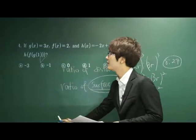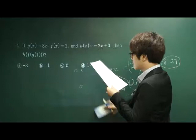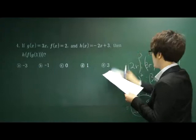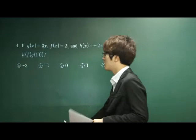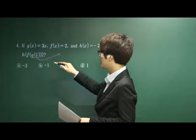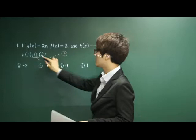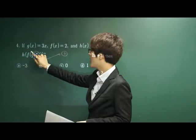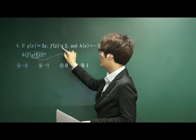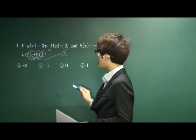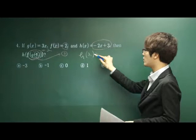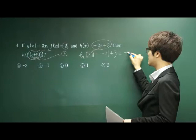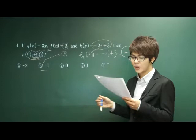If g(x) is 3x, and f(x) is 2, and h(x) is negative 2x plus 3, then what is the composition of the f(g(h)) function? Let's start one by one. Since g(x) is 3x, put 1 in place of x and you get 3. Now we need to solve f(3), but whatever you put in place of x for f(x), you always get 2. So the whole thing equals 2. Then we look for h(2): put 2 in place of x, you get negative 4 plus 3, which equals negative 1. So B is the answer.